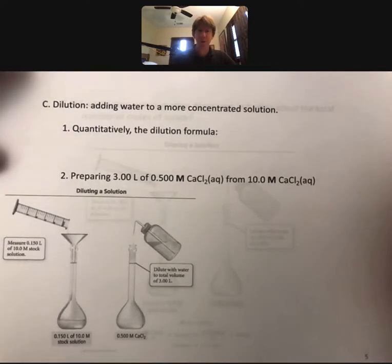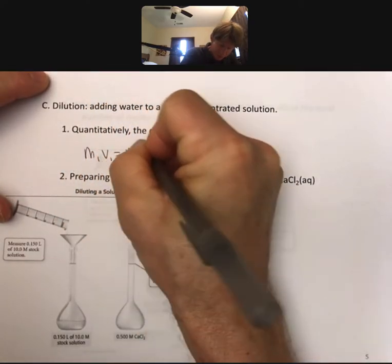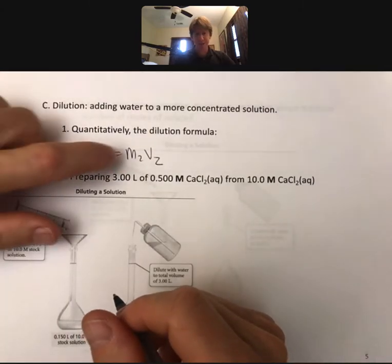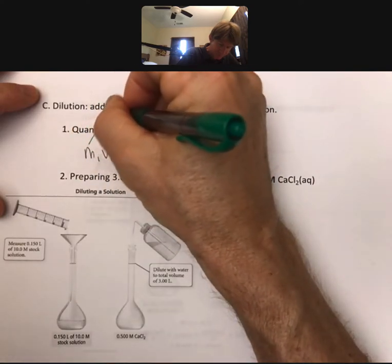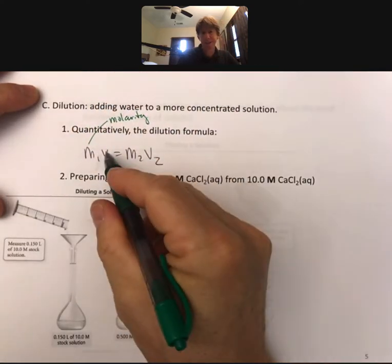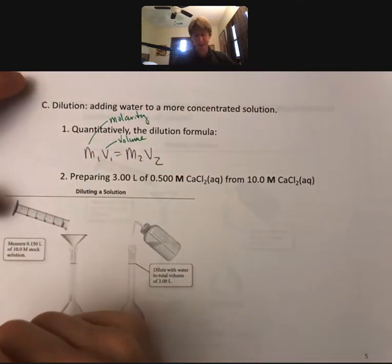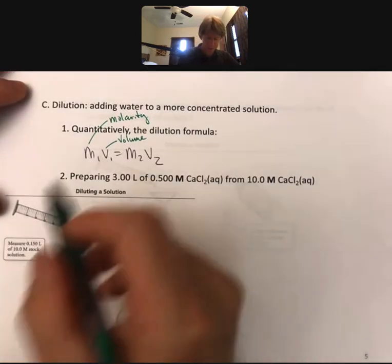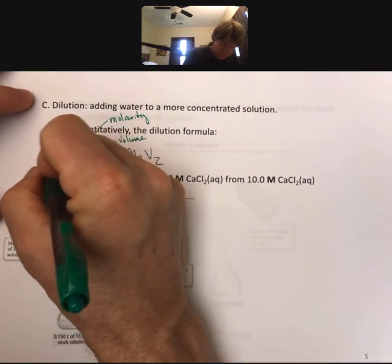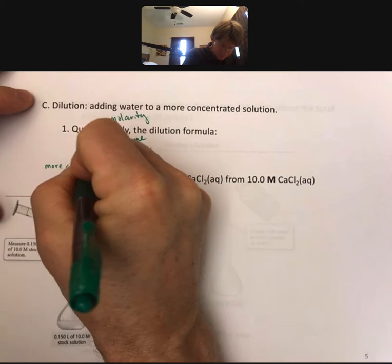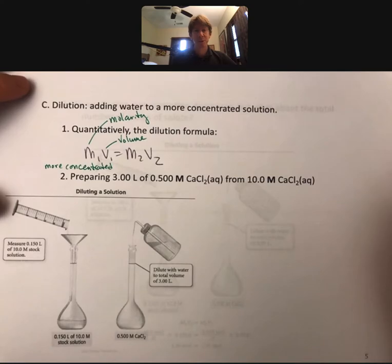Quantitatively, the dilution formula looks like this: M1V1 equals M2V2, where the capital M's stand for molarity and the capital V's stand for volume. Typically, M1 and V1 are my more concentrated solution, and M2 and V2 are my more dilute solution.